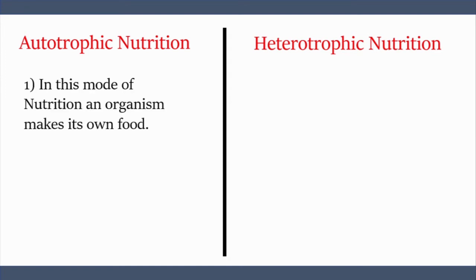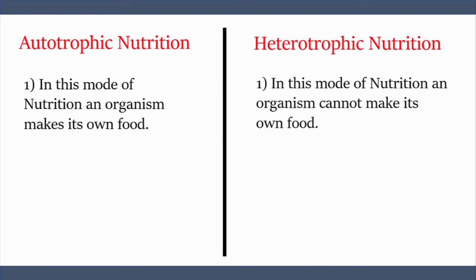First point: in autotrophic nutrition, an organism makes its own food. On the other hand, in heterotrophic nutrition, first point is, in this mode of nutrition an organism cannot make its own food.